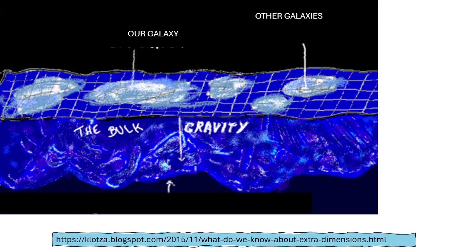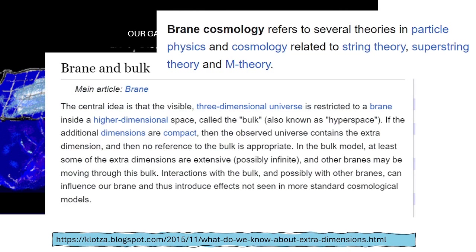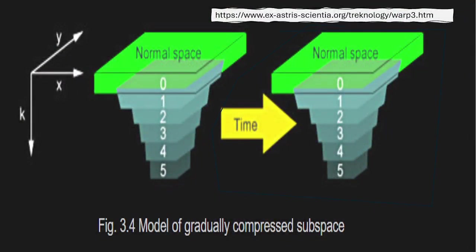The main idea of subspace, or bulk, or hyperspace, does occur in physics and science. The general concept of such theories is that our world is restricted to a brane in higher dimensional space called the bulk. Brane cosmology refers to several theories in particle physics and cosmology related to string theory, superstring theory, and M-theory. The concept in Trek, where it uses subspace around faster than light, seems to work closely with what is shown here.